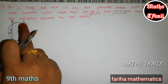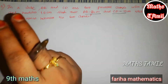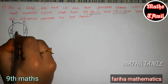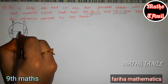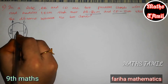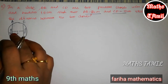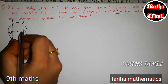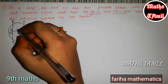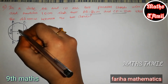Determine the distance between the two chords. The distance between the two chords means this distance here. So we will find where the full distance is, and we will know this portion.